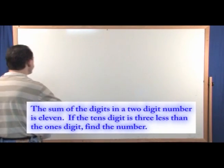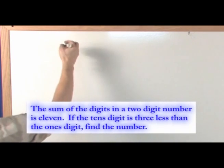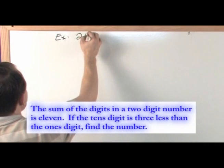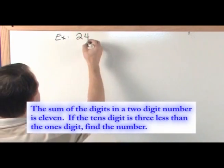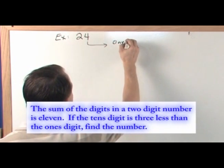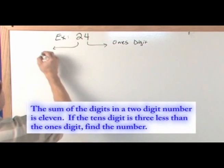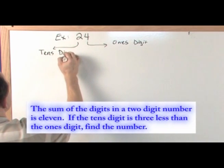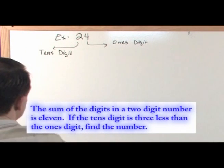First, let's talk a little about tens digit and ones digit. If we have the number 24, this digit on the right is called the ones digit, and this digit on the left is called the tens digit. If I had a number in front like 324, that would be the hundreds digit, and so on.